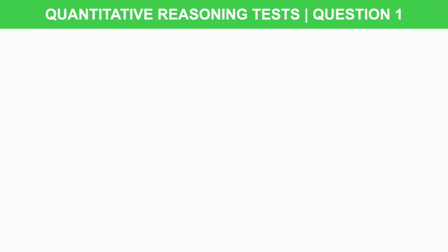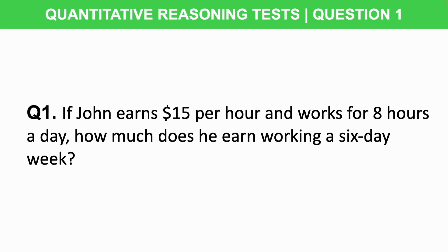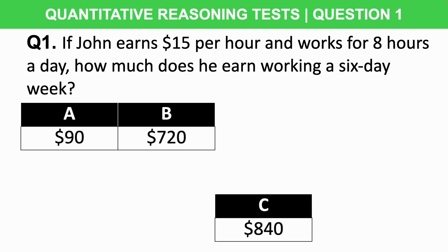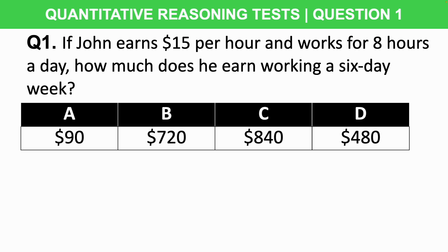Let's start off by looking at this metal example question. Question one: if John earns $15 per hour and works for eight hours a day, how much does he earn working a six-day week? Is it A) $90, B) $720, C) $840, or D) $480? This question type is called quantitative reasoning. The metal quantitative reasoning test assesses a candidate's ability to analyze, interpret and draw conclusions from numerical data. This test is typically 20 questions in 20 minutes and evaluates quantitative skills, problem-solving abilities, and logical reasoning.